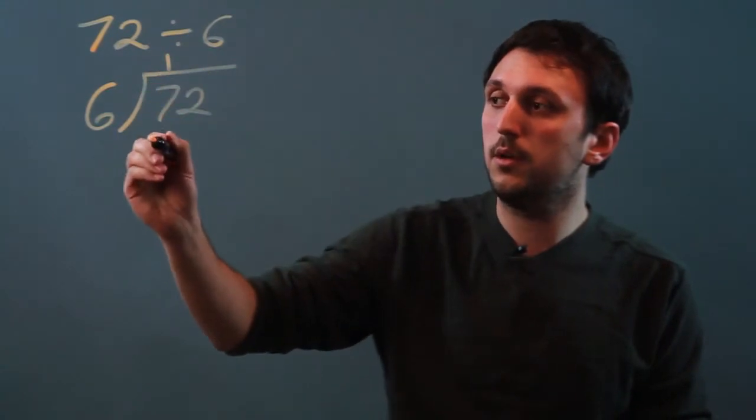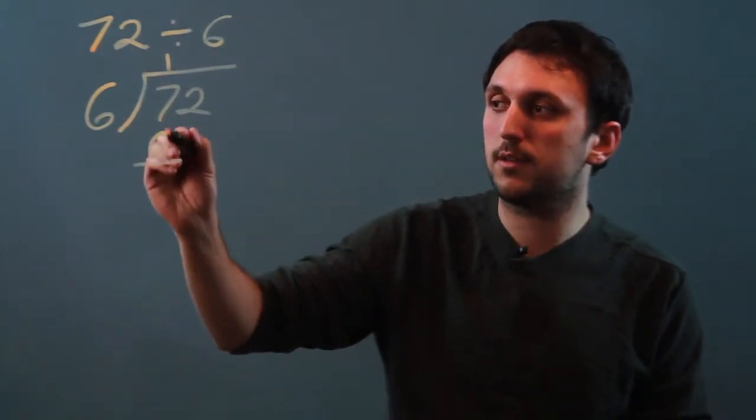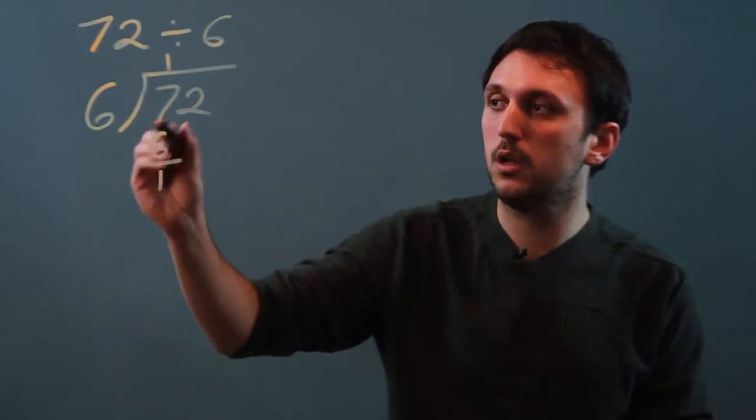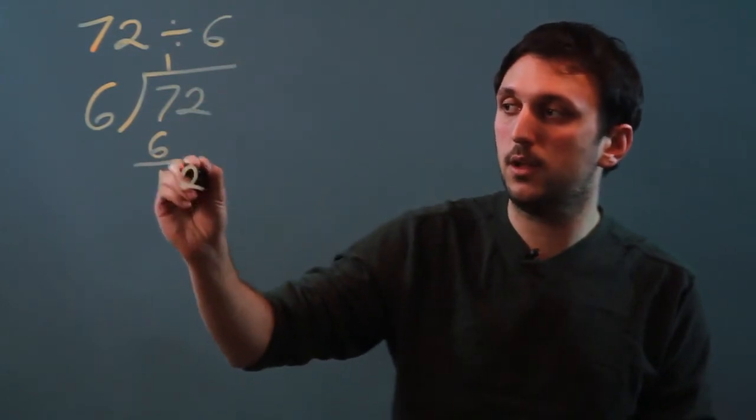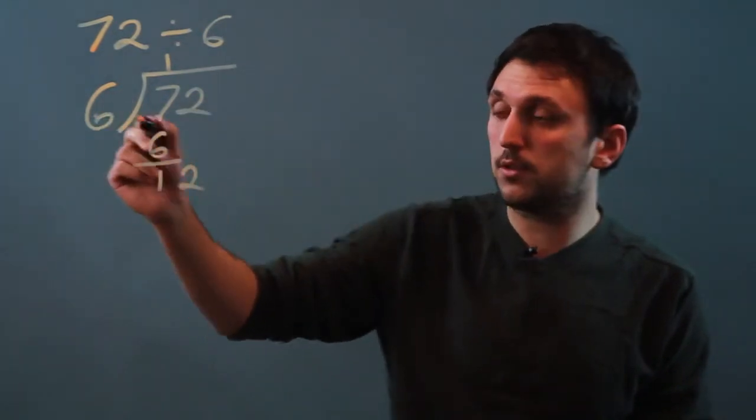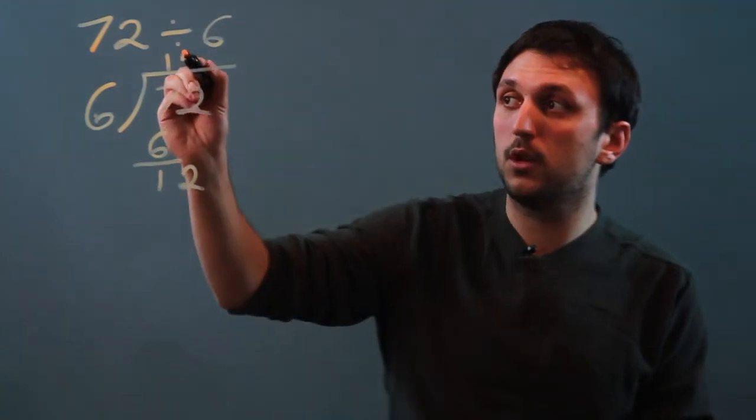Then we put a 6 here. We subtract. 7 minus 6 is 1. We bring the 2 down, so now we have 12. 6 goes into 12 how many times? Twice.